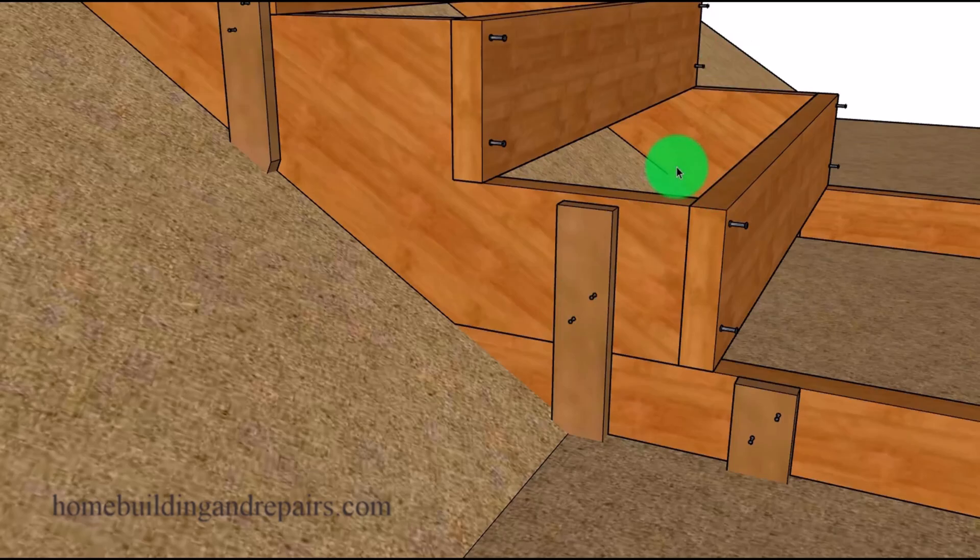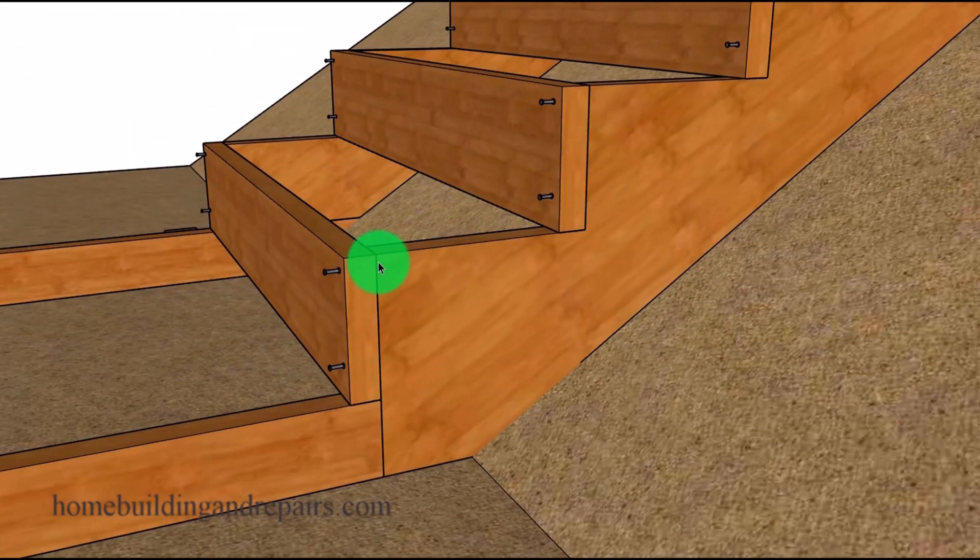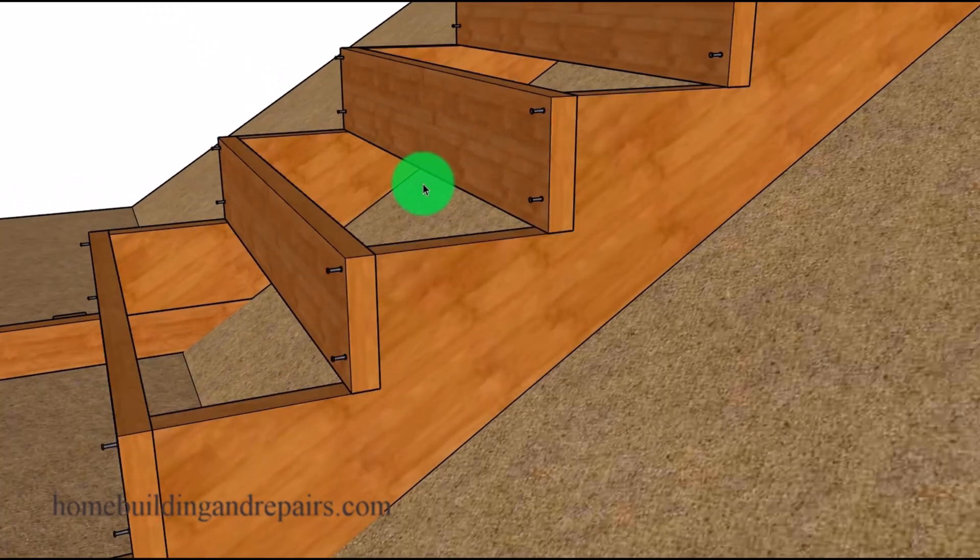Next up, I want to provide you with another idea, something that might work better for you under other circumstances. For example, here we have the stringer sitting on top of the forms. However, if we were going to build the stairway forms first, then you might want to have the forms sit below the top of the form, if that's going to work better.